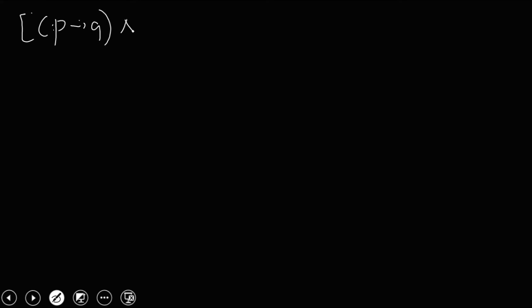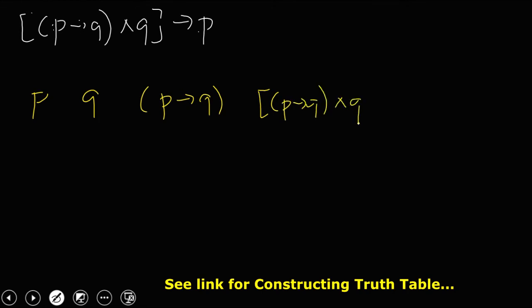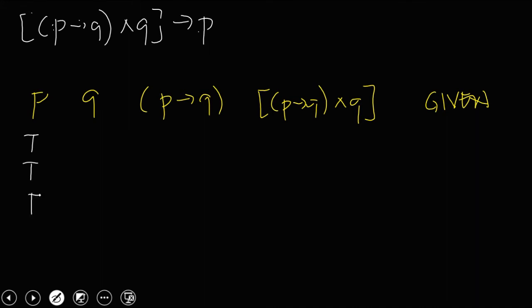The equation is (P → Q) ∧ Q → P. In constructing the truth table, start with the given variables P and Q. There is no ¬P or ¬Q needed. Then add the column P → Q, then the bracket column (P → Q) ∧ Q, then the last column for the full given equation. Values for P: true, true, false, false. For Q: true, false, true, false. These values are fixed.